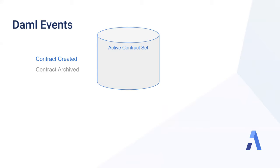Every command can cause many contracts to be archived and many contracts to be created, but the command itself is very simple. As a user, all I had to do is specify that I want to transfer ownership, and the DAML runtime translates that into all of the events that need to happen and who needs to be aware of which events. That also translates to the change in active contract set for each user of the ledger. I'll go into much more detail about this in a future presentation about the DAML transaction graph.